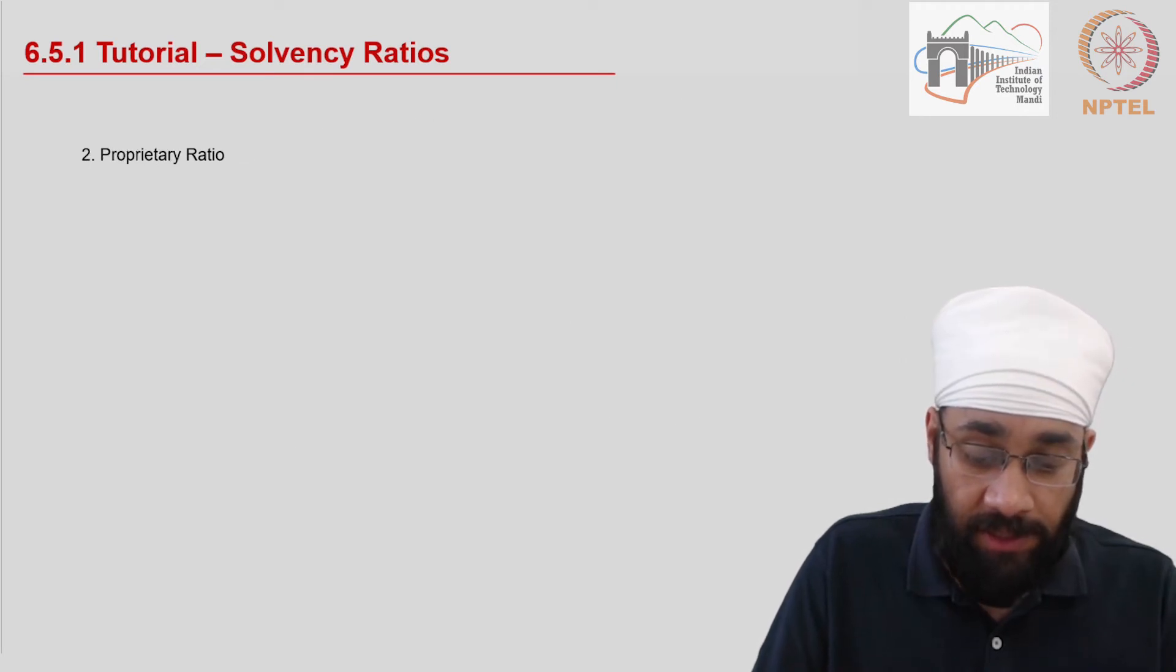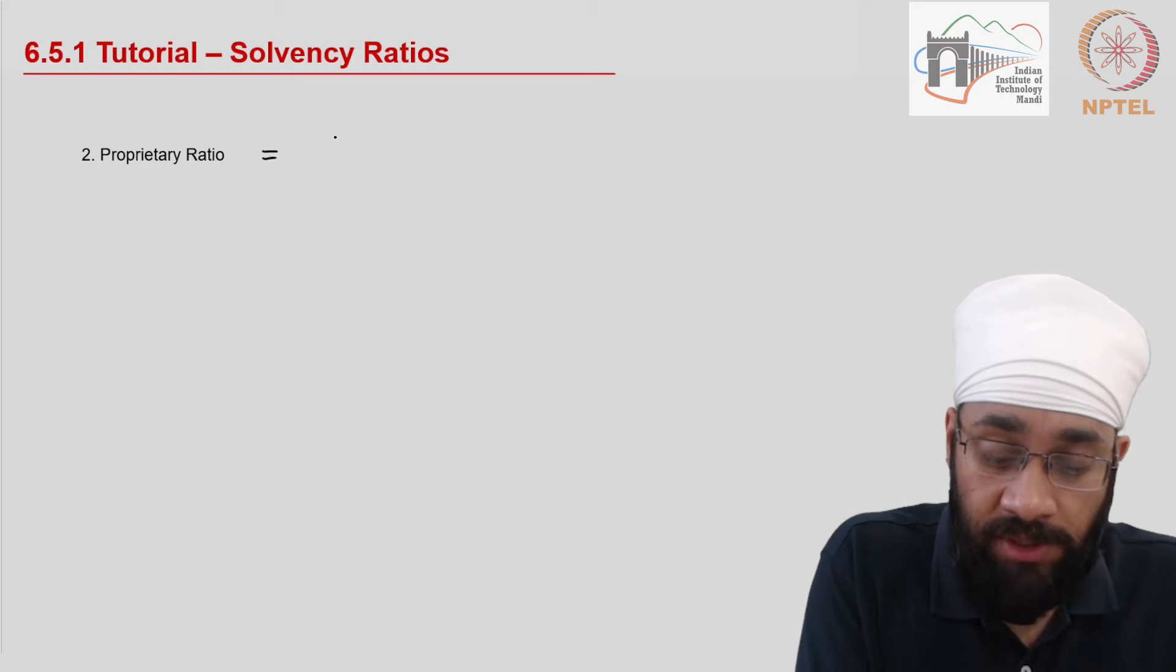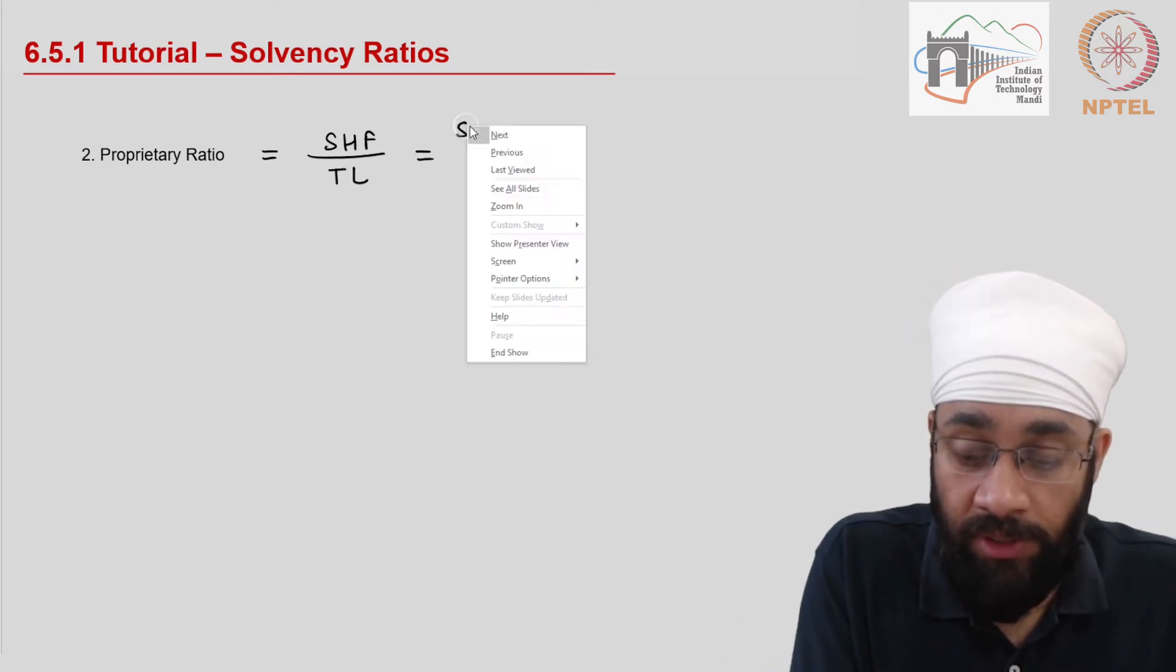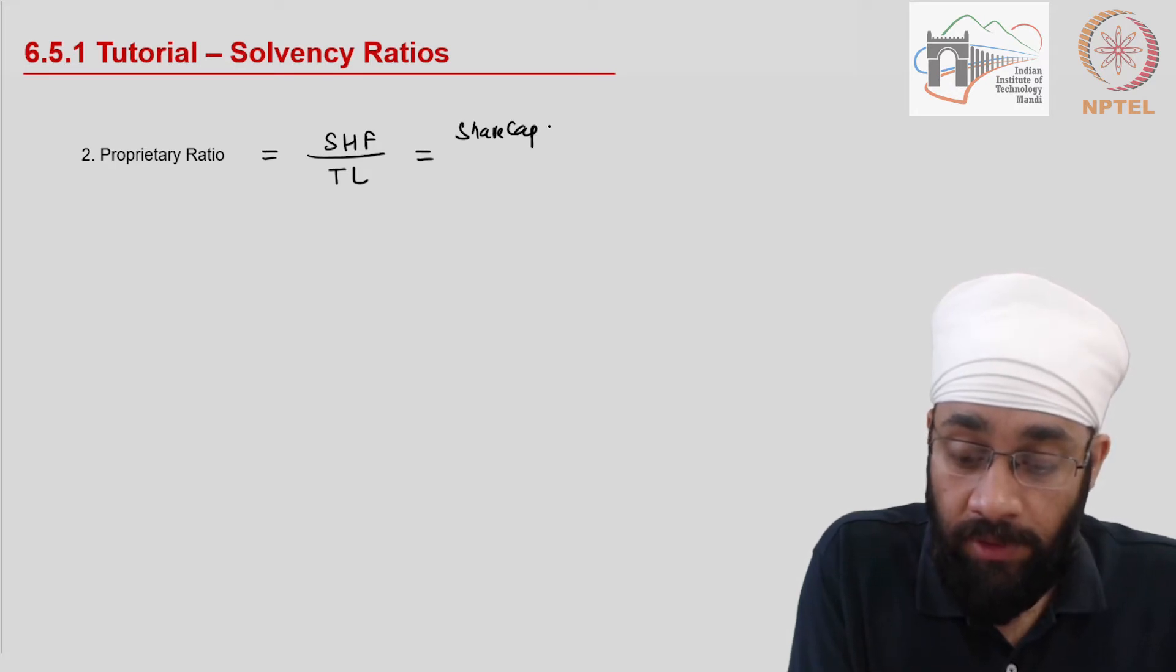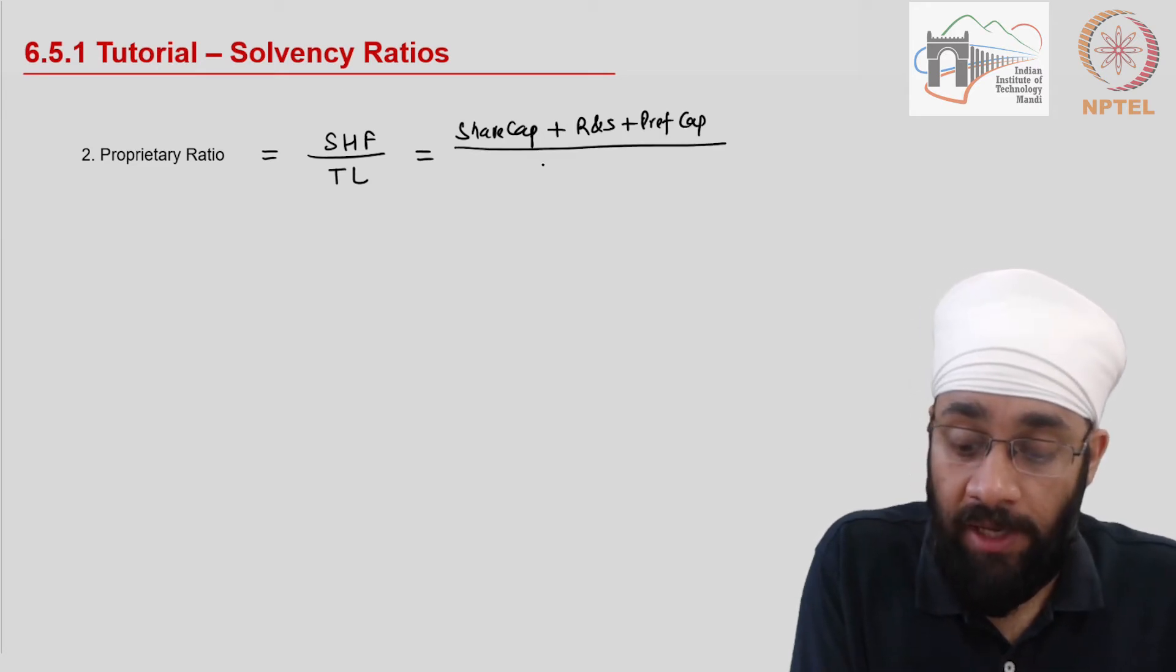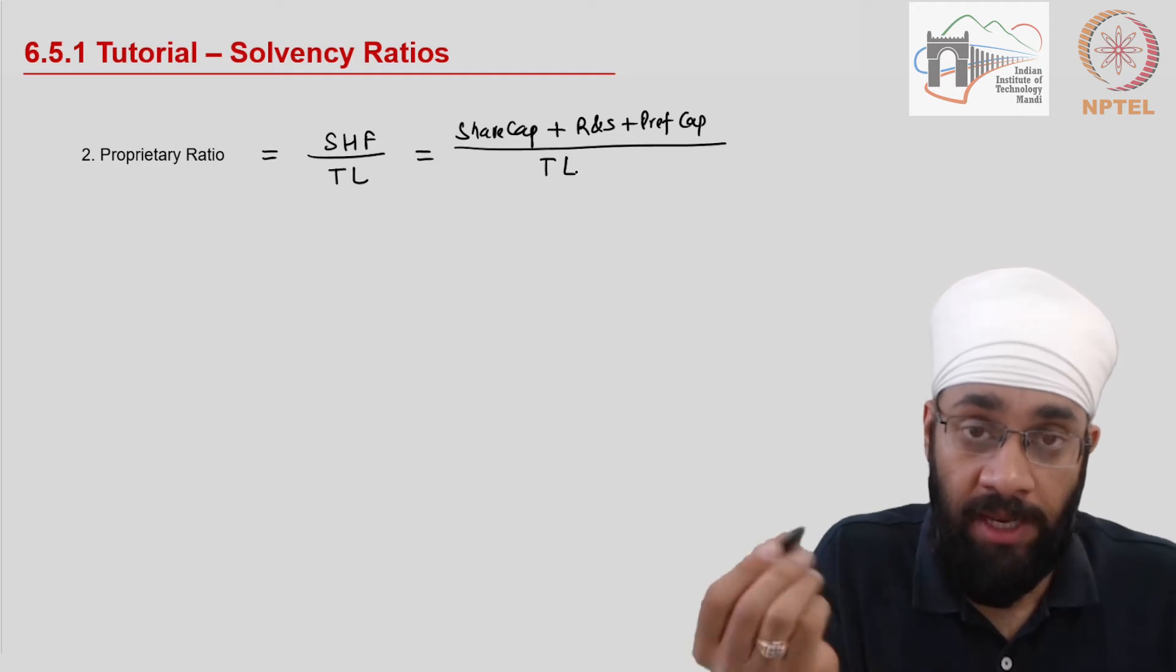The next indicator is proprietary ratio, and proprietary ratio is calculated by dividing shareholder funds with the total liabilities of the business. Shareholder funds include the share capital plus the reserves and surplus plus any preference share capital, and divide this by total liability.